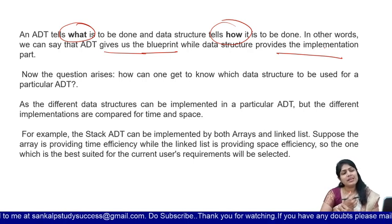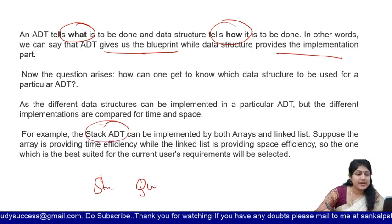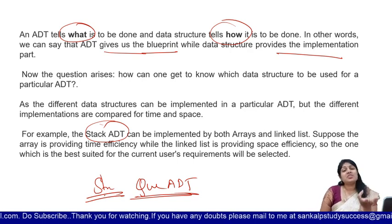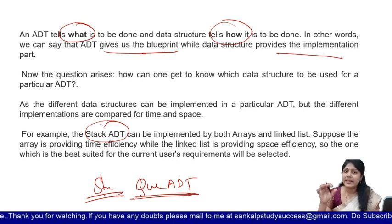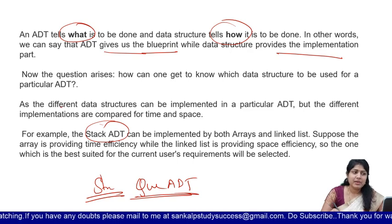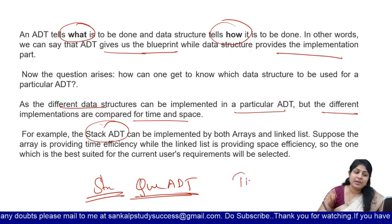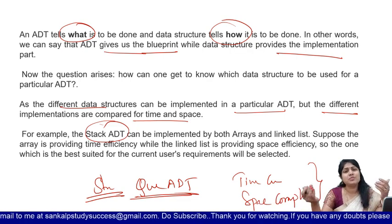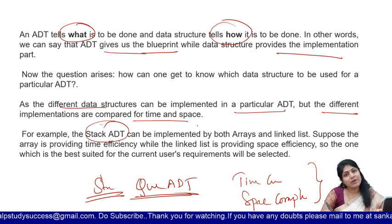Now the question arises: how can one get to know which data structure to be used for a particular ADT? We have seen stack ADT and queue ADT. So which data structures do we have to use? That depends on the data and what we require. As different data structures can be implemented in a particular ADT, the different implementations are compared for time and space — time complexity and space complexity. Based on these two parameters, we choose that particular data structure.